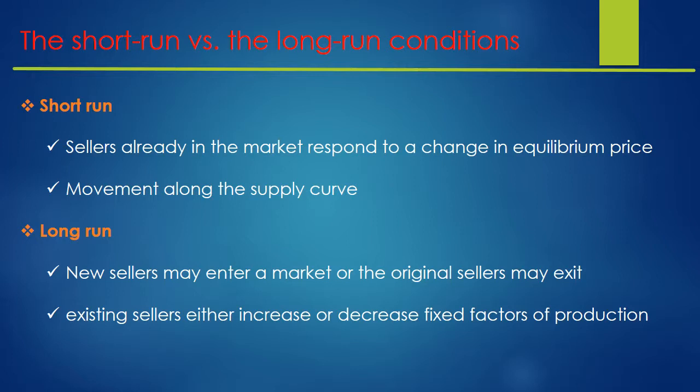In the long run, it is basically related to new sellers that may enter a market or the original sellers may exit. For example, the young population — millennials — is growing, while the baby boomer population is exiting or declining. This will have a long-run effect on supply and demand.